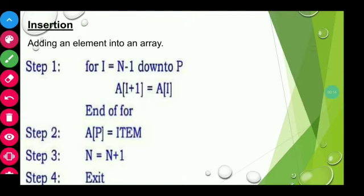The process done here is: the element at current position a[i] is shifted to its higher order position a[i+1]. After that, the new element item is inserted at the position a[p]. After insertion, the size of the array will be increased by 1, that is n = n + 1.